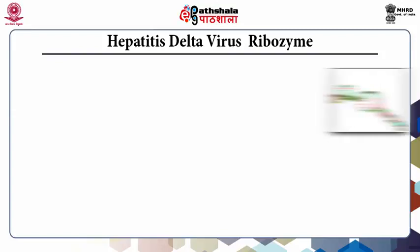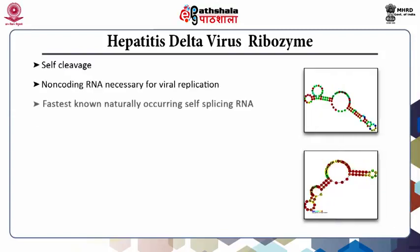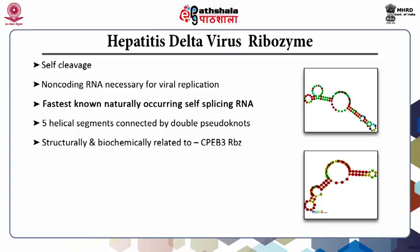The hepatitis delta virus (HDV) ribozyme, found in hepatitis delta virus, plays a role in viral replication and is the only ribozyme required for the viability of a human pathogen. It is the quickest known naturally occurring ribozyme and possesses five segments which are helical, connected by a double pseudoknot. It is found to be active in vivo even in the absence of any protein factors, and studies have also revealed the presence of an active site cytosine and a divalent metal facilitating the cleavage reaction.